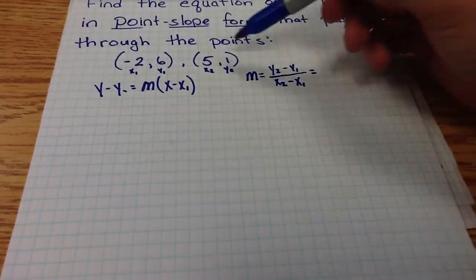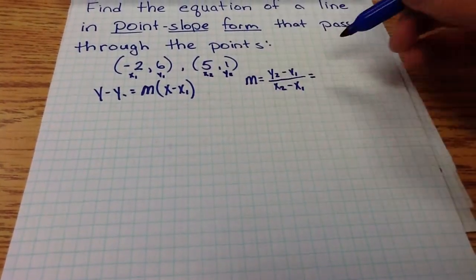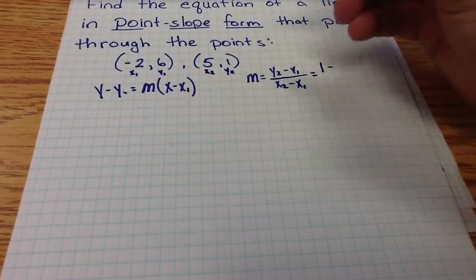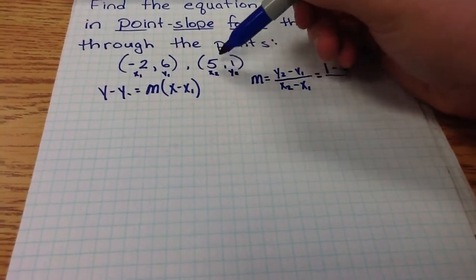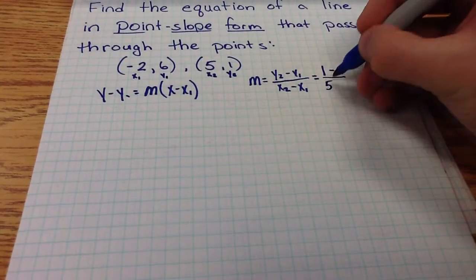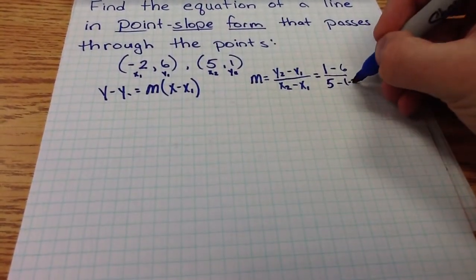We now can plug in these values to this equation. So y2 is 1 minus y1, which is 6, divided by x2, which is 5, minus x1, which is negative 2.